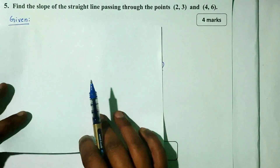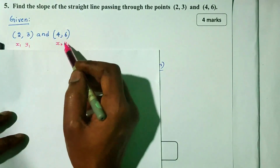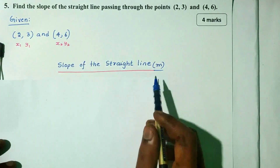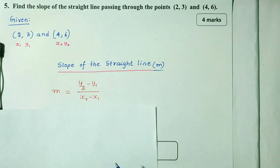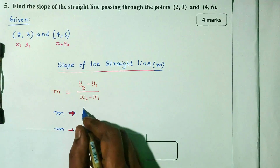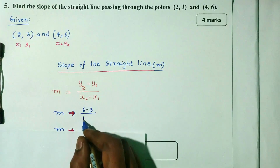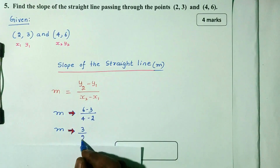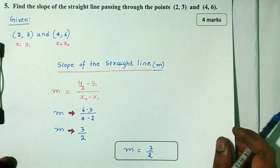What is the slope? The first point is (x1, y1) and the second point is (x2, y2). The slope of a straight line is m = (y2 minus y1) divided by (x2 minus x1). So y2 is 6, y1 is 3: 6 minus 3 divided by x2 minus x1 is 4 minus 2. 6 minus 3 is 3, divided by 4 minus 2 is 2. So slope m = 3/2. That is the 4-mark answer.